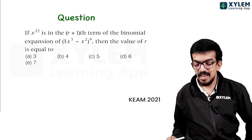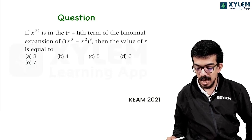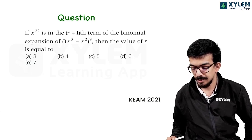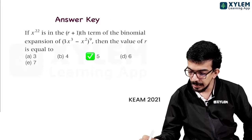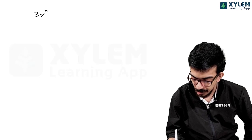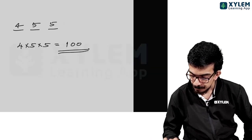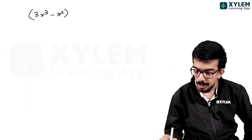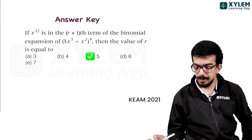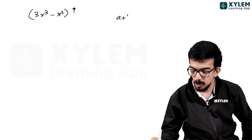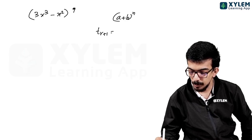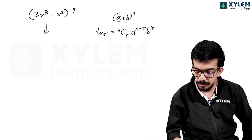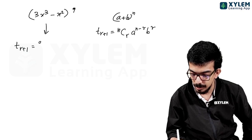Next question. If x raised to 22 is in the (r+1)th term of the binomial expansion of (3x³ - x²)^9, then the value of r is equal to. The (r+1)th term of the binomial expansion of (3x³ - x²)^9 is 9Cr into (3x³)^(9-r) into (-x²)^r.